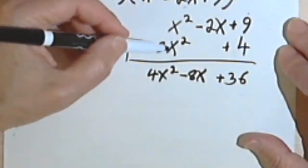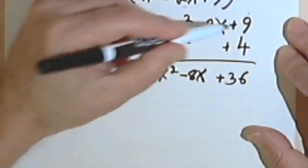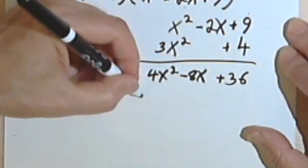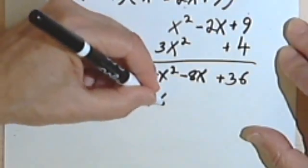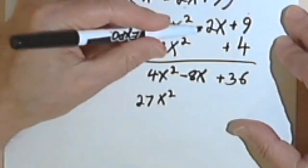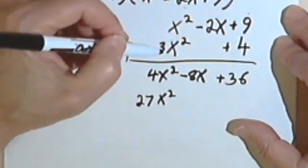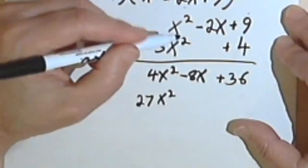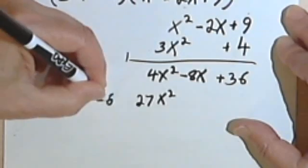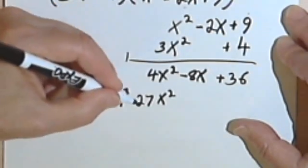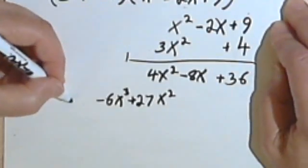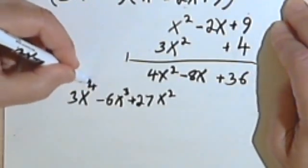Now I'm going to multiply by 3x squared. So 3x squared times 9: 3 times 9 is 27, so I'm going to my x squared column, I've got 27x squared. 3x squared times negative 2x, so 3 times negative 2 is negative 6, x squared times x is x to the third, so this is going to be negative 6x to the third. And I've got 3x squared times x squared, so that will be 3x to the fourth.